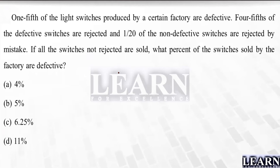Since no total value is given, we can assume the total number of switches is 100. They have told one-fifth of the light switches are defective — one-fifth of 100 is 20, so 20 are defective.